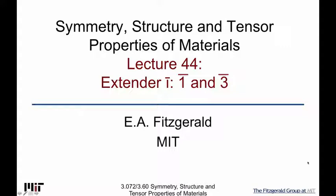I mentioned at the end of last lecture that we're going to go on to 2-2-2, but I decided to just knock off adding the inversion center to the simpler rotations. It seemed to make sense to handle the left-hand side of our chart first, because there's actually only three unique cases. We are also going to figure out that there is a 4-bar, and it's 1-bar and 3-bar, showing that these are different from 4-plus-1, which is 4m, etc.